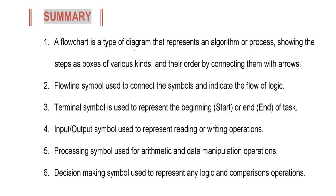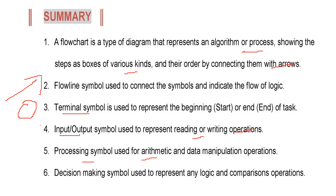In summary: a flowchart is a type of diagram that represents an algorithm, a process, or a decision-solving procedure — specifically as a precursor to making a program. It shows steps as boxes of various kinds connected through arrows. The flow line symbol connects symbols and indicates the flow of logic. The terminal symbol (circle or ellipse) represents the beginning and end of a task. The input-output symbol (parallelogram) represents reading and writing operations. The processing symbol (rectangle) is used for arithmetic and data manipulation. The decision-making symbol (diamond) represents logic and comparison operations.